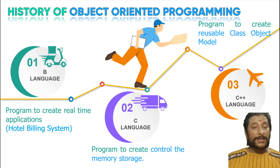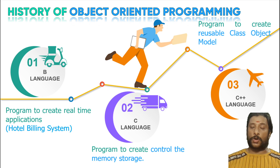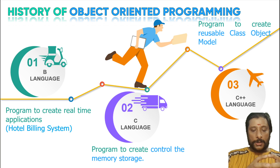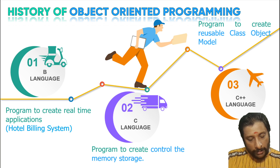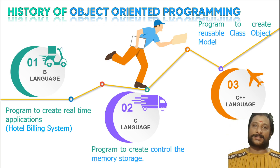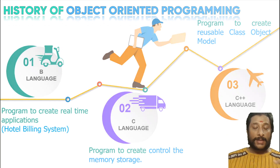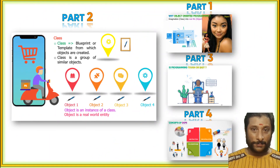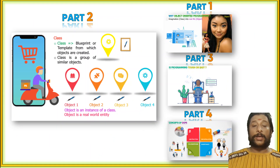That is why the great technology C++ came, which is called the class and object model — that is called object-oriented programming. Programs are written on an object basis, and your object is used in the program. That is why it is called object-oriented programming.